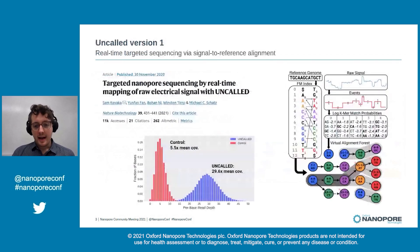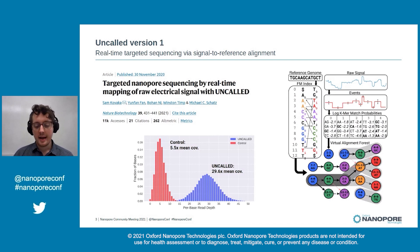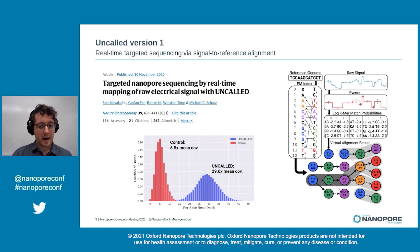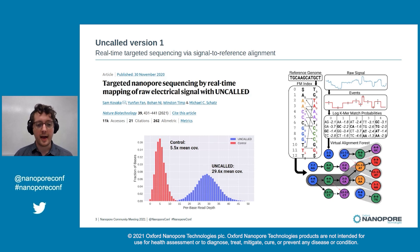Uncalled was based on the FM index, which is a data structure used by a lot of DNA aligners. It considered many K-mers which the signal could represent and tried to find paths to the reference consistent with those K-mers. We demonstrated adaptive sampling depletion on a mock microbial community and enrichment of several human cancer genes on a cell line.